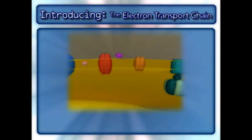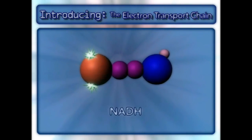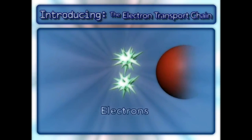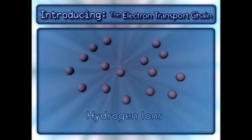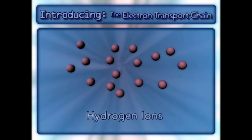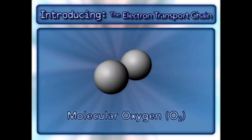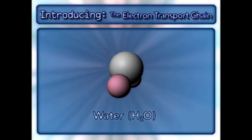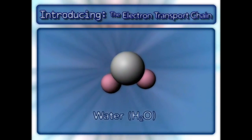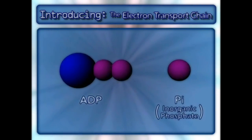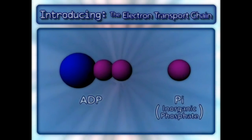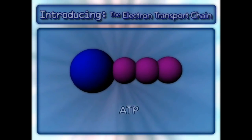Other key components in this process are NADH and the electrons from it, hydrogen ions, molecular oxygen, water, and ADP and inorganic phosphate, which combine to form ATP.